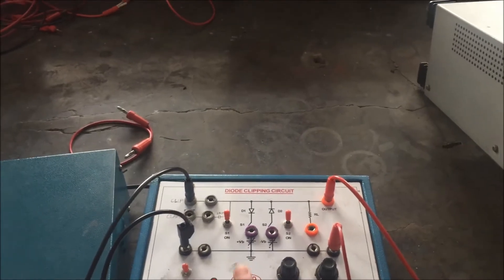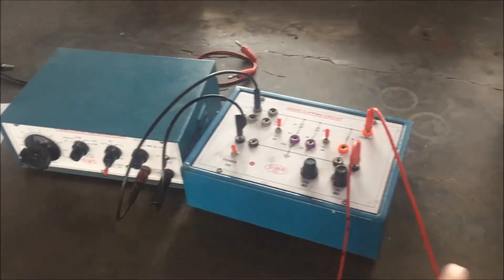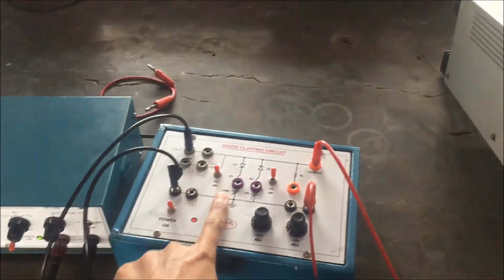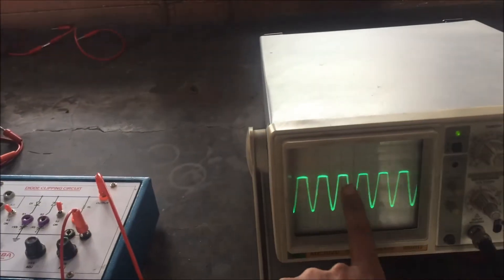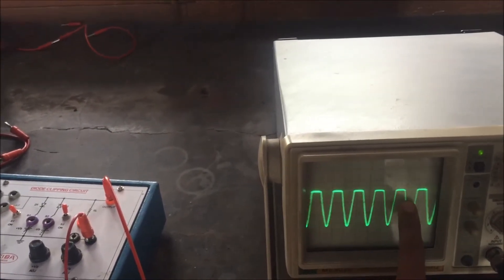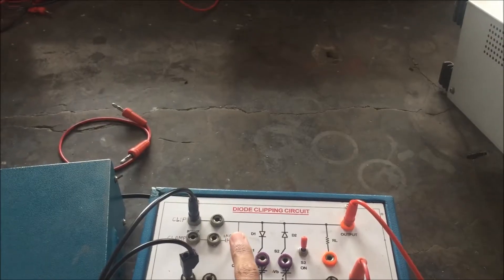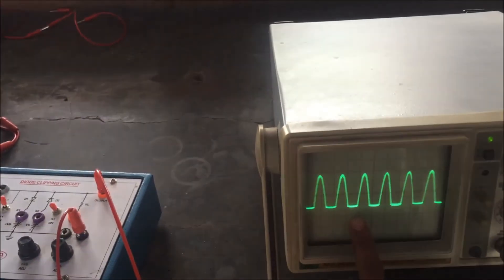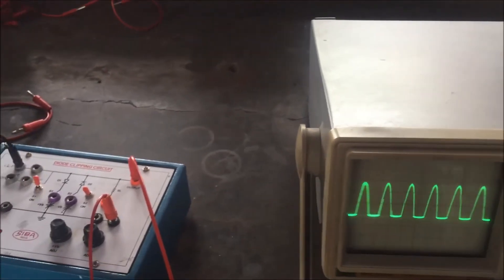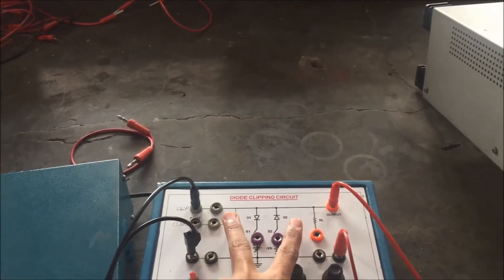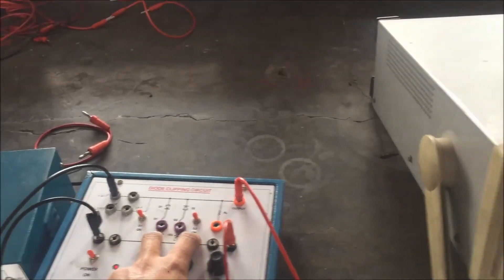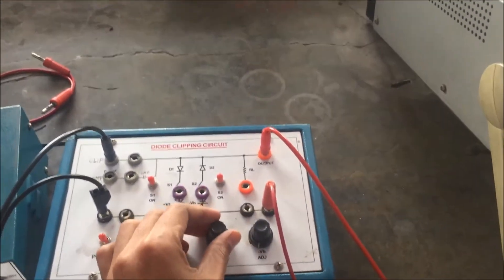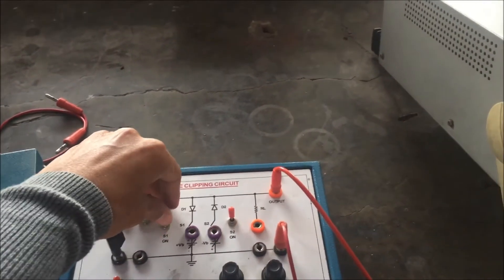So now you can see this is positive clipper and the positive part of the input is clipped. Positive part is clipped. Now I am switching to the negative clipper. So you can see the negative part is clipped. And when I turn this on, this is called combination clipper. So you can see positive and negative parts both are clipped.